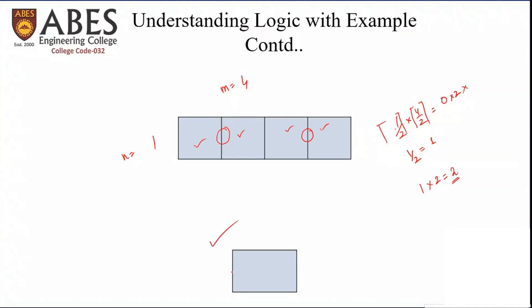For a 1×1 grid: ceiling(1/2.0) × ceiling(1/2.0) = 1×1 = 1 supply, which is correct. We must ensure that when N or M is 1, dividing by 2.0 (not 2) gives a non-zero ceiling value of 1, not zero. This handles the edge case correctly.